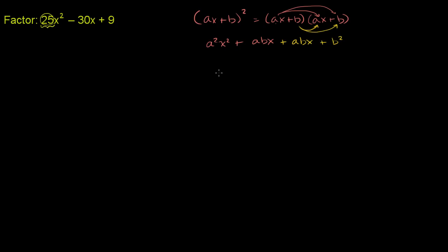So this is equal to a squared x squared plus, these two are the same term, plus 2abx plus b squared. So this is what happens when you square a binomial.